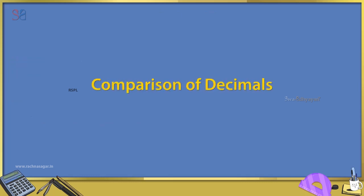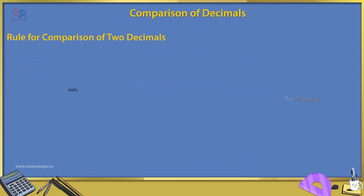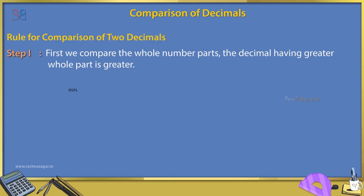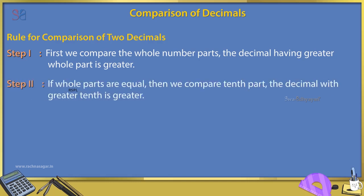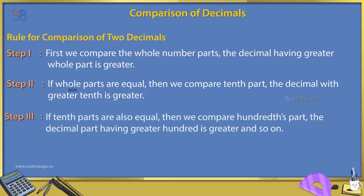Comparison of decimals — Rules for comparison of two decimals: Step 1: First, compare the whole number parts. The decimal having greater whole part is greater. Step 2: If whole parts are equal, compare the tenth part. The decimal with greater tenth is greater. Step 3: If tenth parts are also equal, compare the hundredths part. The decimal with greater hundredths is greater, and so on.